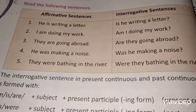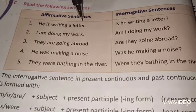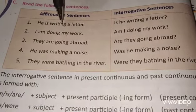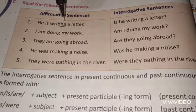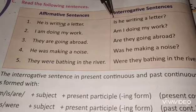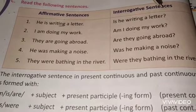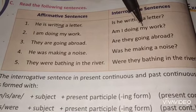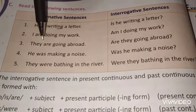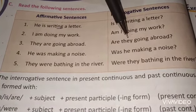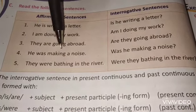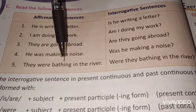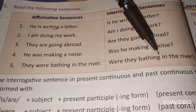Now read the following sentences. He is writing a letter — this is present participle, the -ing form. Is he writing a letter? Number 2: I am doing my work. → Am I doing my work? Number 3: They are going abroad. → Are they going abroad? Number 4: He was making a noise. → Was he making a noise? Number 5: They were bathing in the river. → Were they bathing in the river?